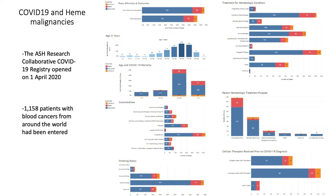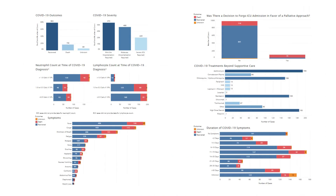The ASH collaborative COVID registry, with 1,158 patients with blood cancer, analyzed outcomes by race, age, infection location, comorbidities, and smoking status. The mortality (red bar) constitutes around 20–25%, much higher than the general population. The death rate overall was 17.5%, and more than 50% had moderate to severe disease. They also reported outcomes per neutrophil and lymphocyte count.